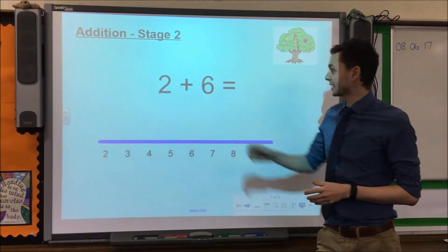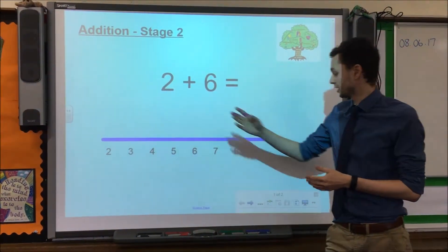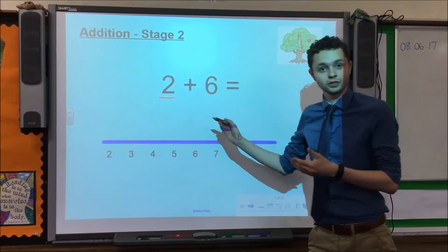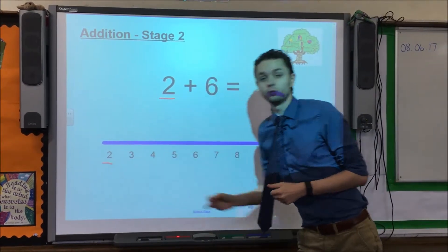How this method works is we take the first number in the calculation, in this case the number 2, and we find it on our number line. So we can see 2 is the first number, we find 2 on the number line.